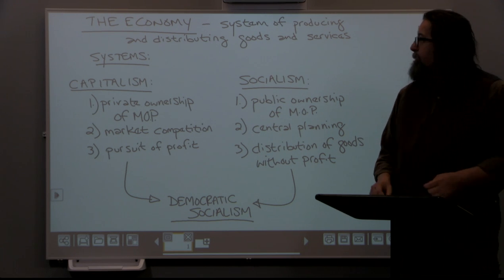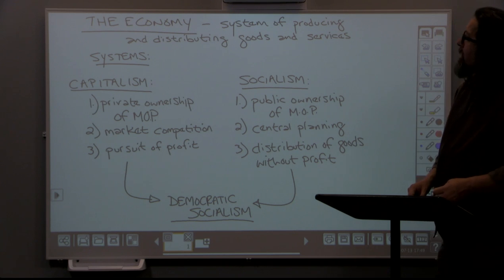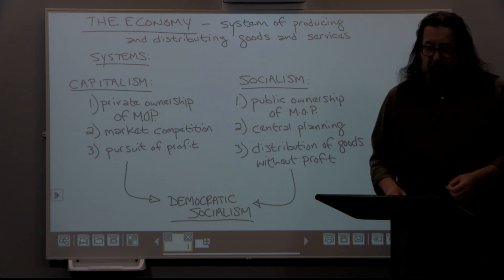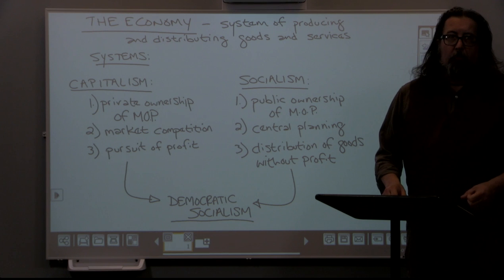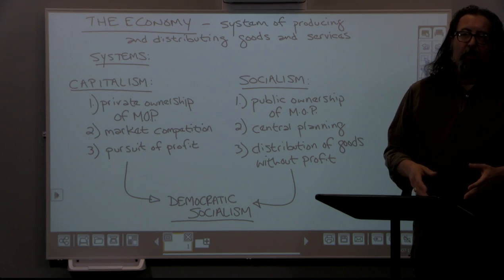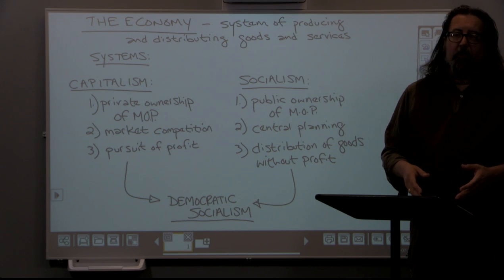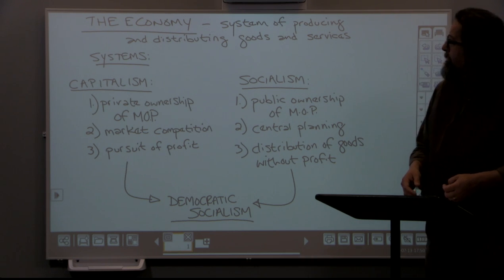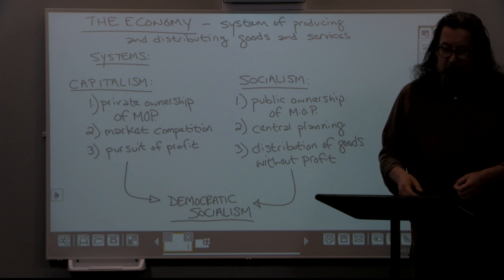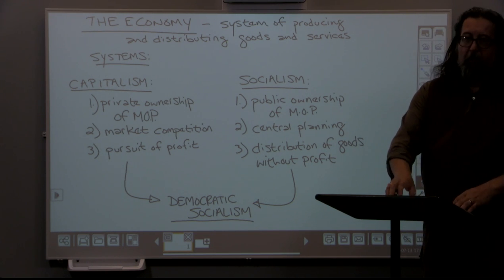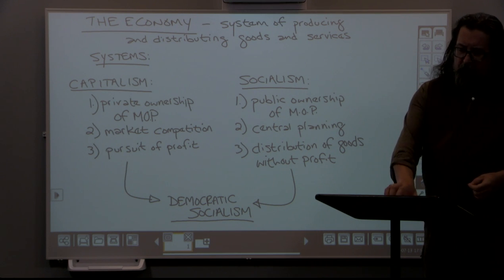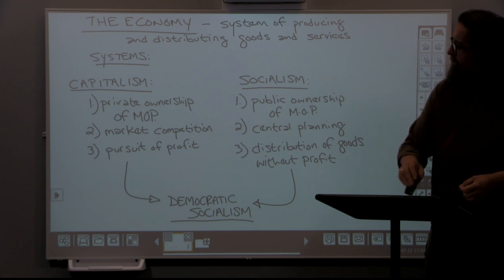There are different economic systems — not all economies are the same. Looking around the world, the two most distinguishable and divergent types of economic systems are capitalism and socialism. We're going to discuss each of these in turn and then talk about the modern world.